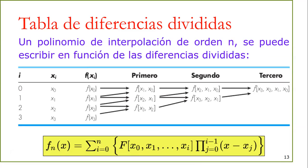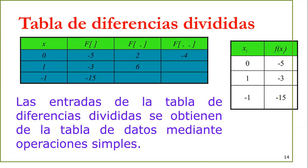Antes de eso, vamos a pasar a un ejemplo. Tenemos ya la construcción de la tabla de diferencias divididas. A la derecha tenemos el conjunto de puntos; en este caso tenemos tres puntos, entonces la tabla llega hasta las diferencias de orden 2. Las dos primeras columnas, x y f, corresponden a los mismos valores de los datos. La diferencia de primer orden la construimos a partir de esa columna f, y la de segundo orden a partir de la de primer orden.